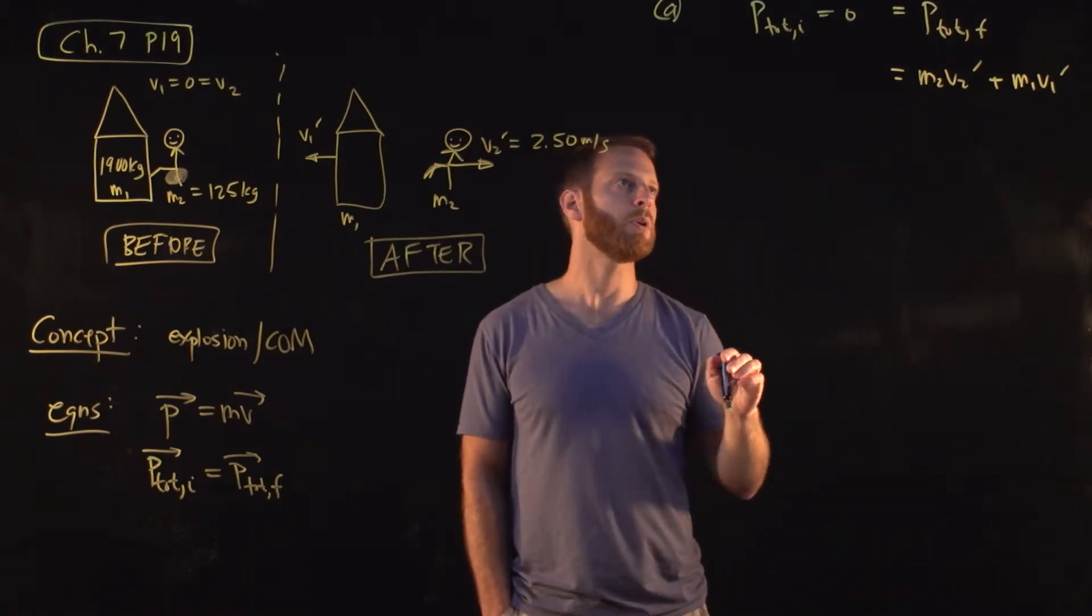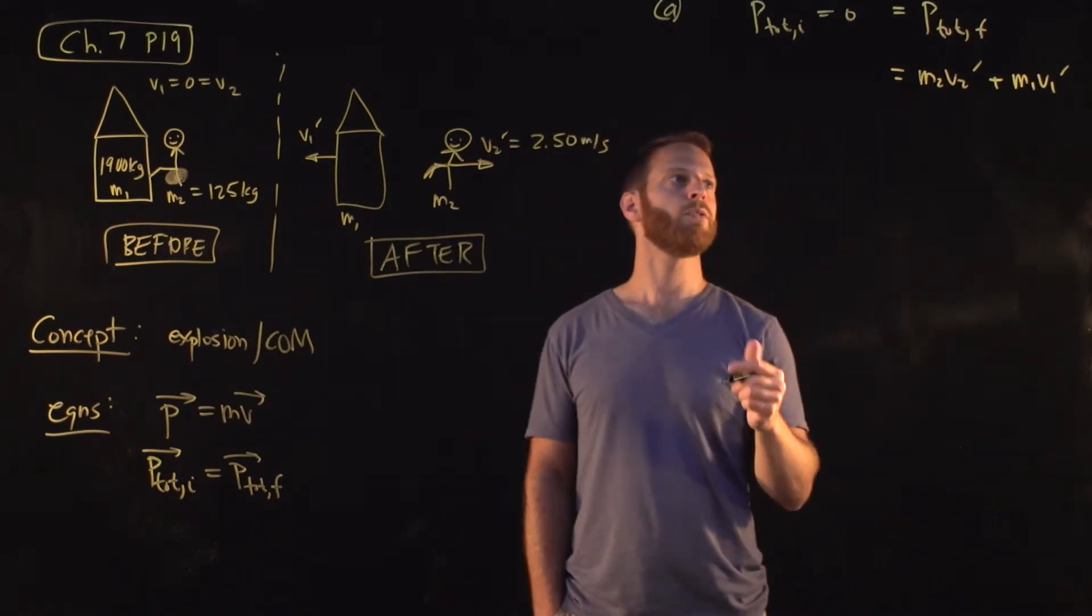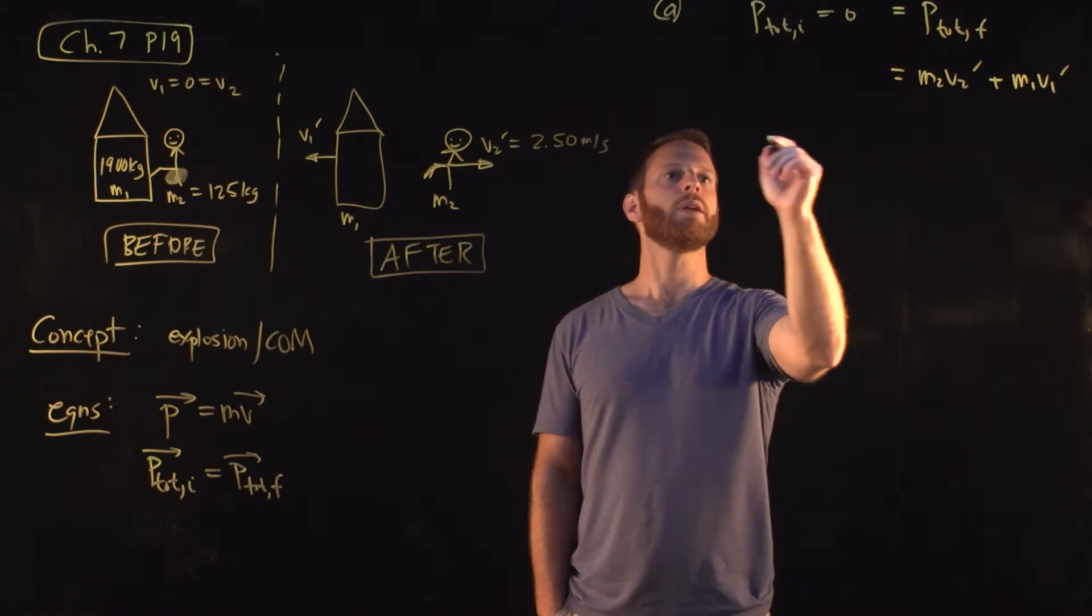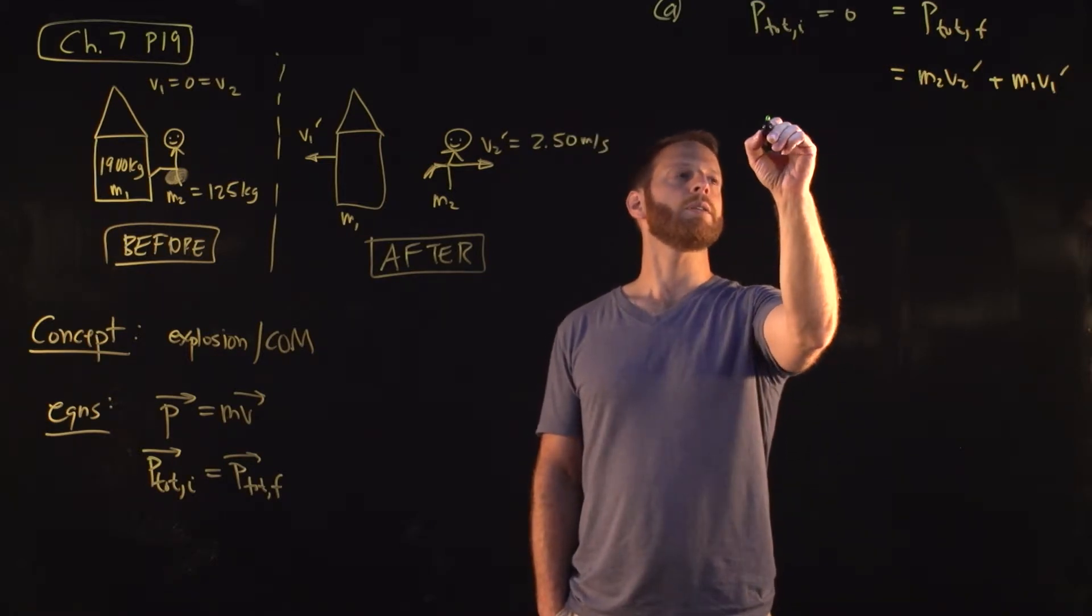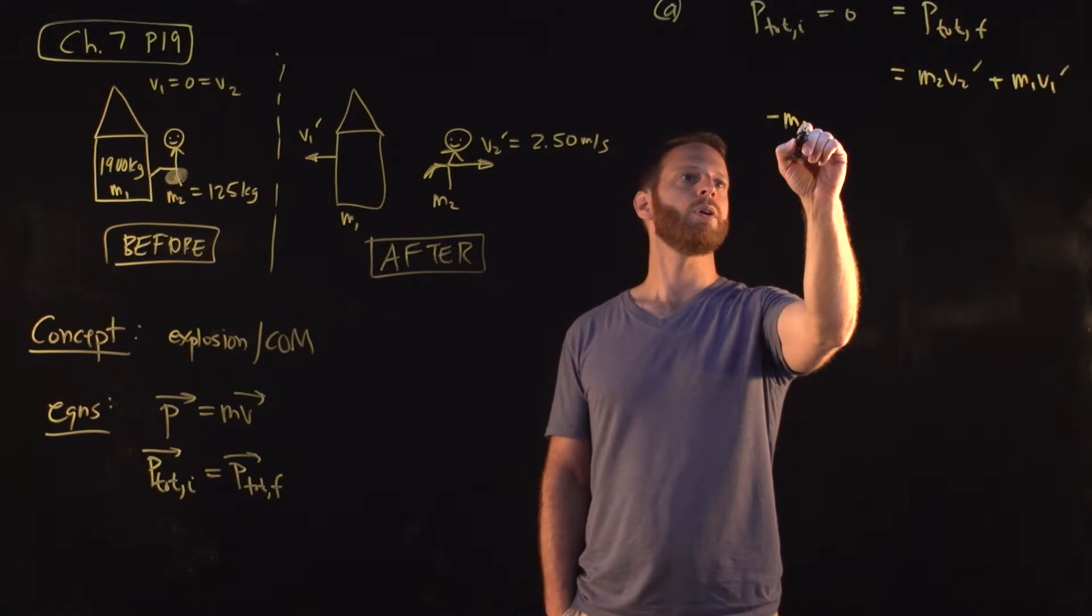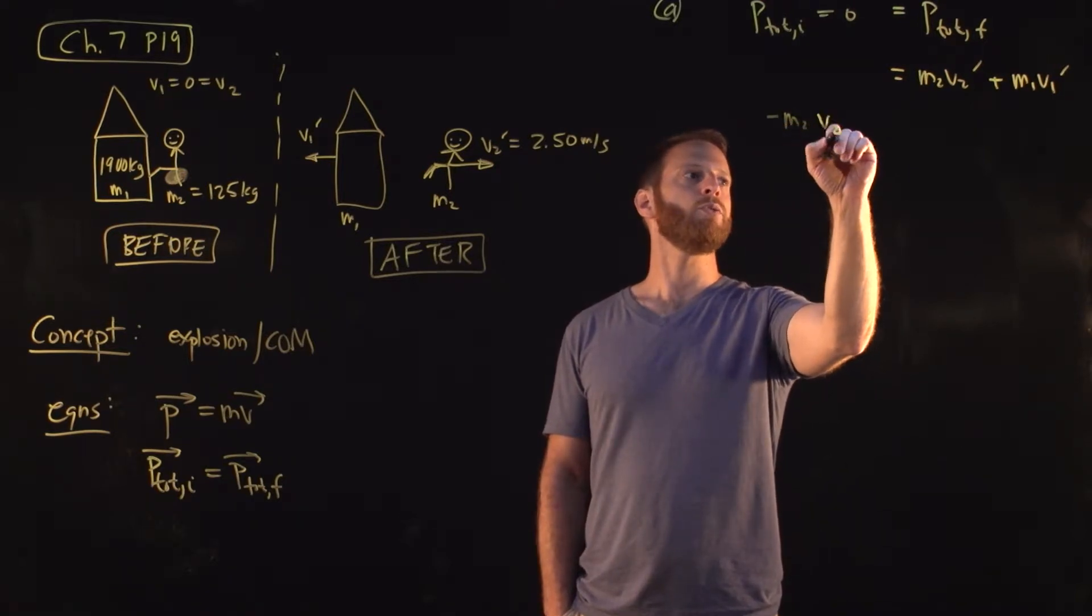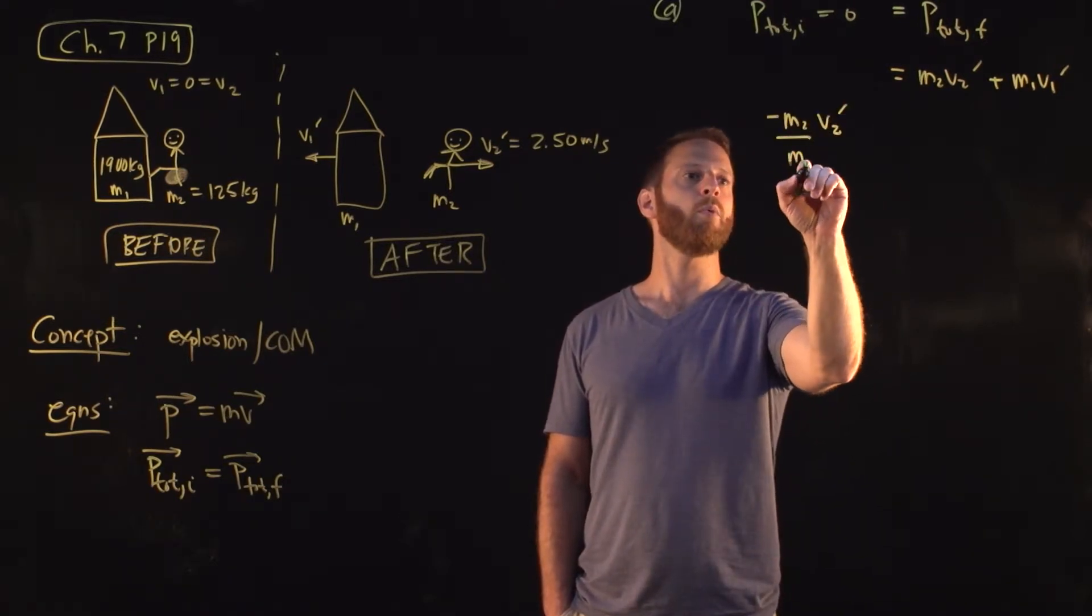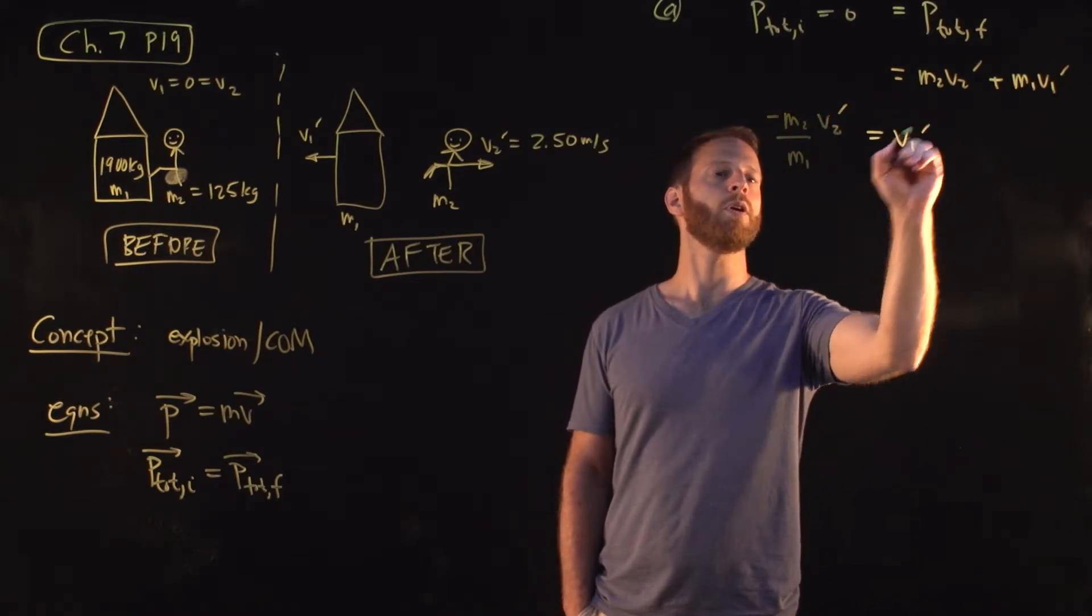Realize I'm doing this all in algebra. This is all equal to zero, so let's solve for V1 prime. Apparently, we put it all together that we have V1 prime equals minus M2 V2 prime divided by M1.